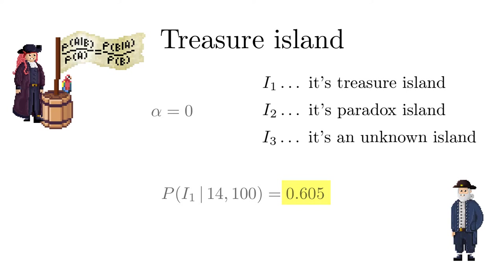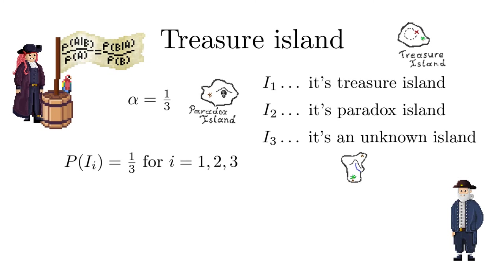But what if we allow for the third alternative and assume, since we don't know any better, that all three islands have the same probability, one third? Then we obtain completely different posterior probabilities.